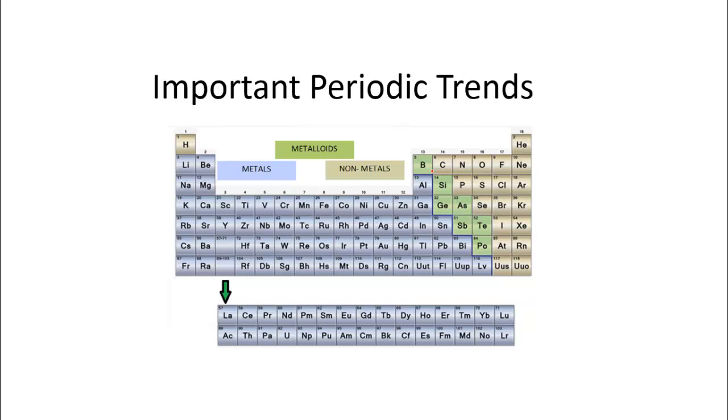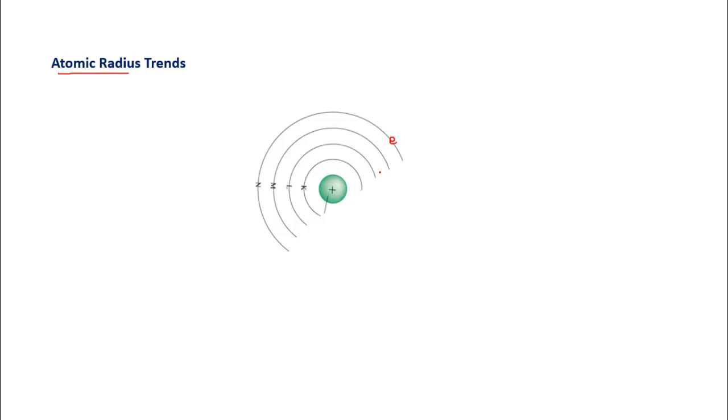In this video we're going to learn about some of the important periodic trends in the periodic table. Let's first discuss atomic radius. Atomic radius is the distance from the center of the nucleus up to the valence shell. For example, if an atom has its valence electron in the fourth shell, the radius is the distance from the center of the nucleus up to that valence shell. Higher radius means the size is bigger.